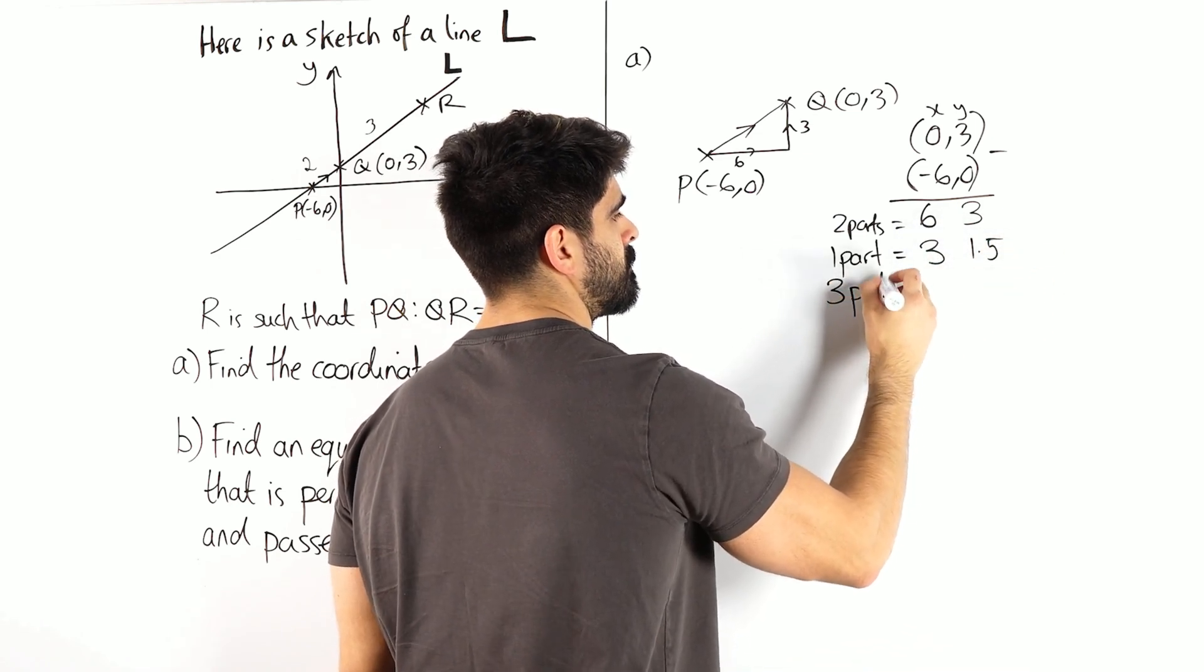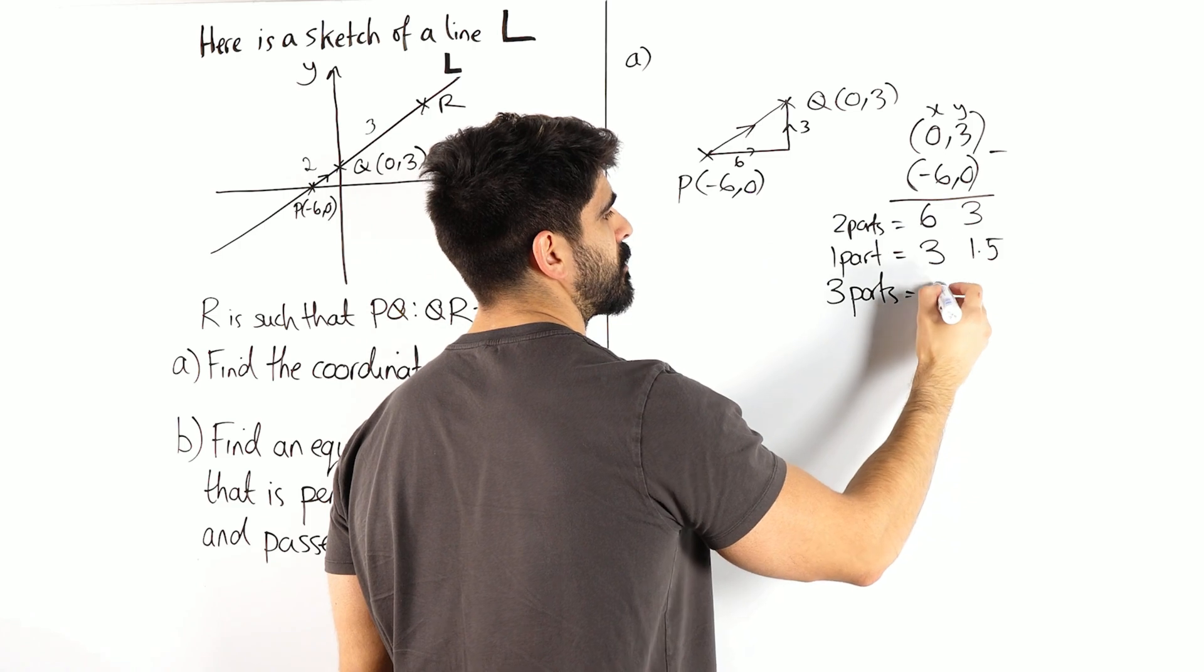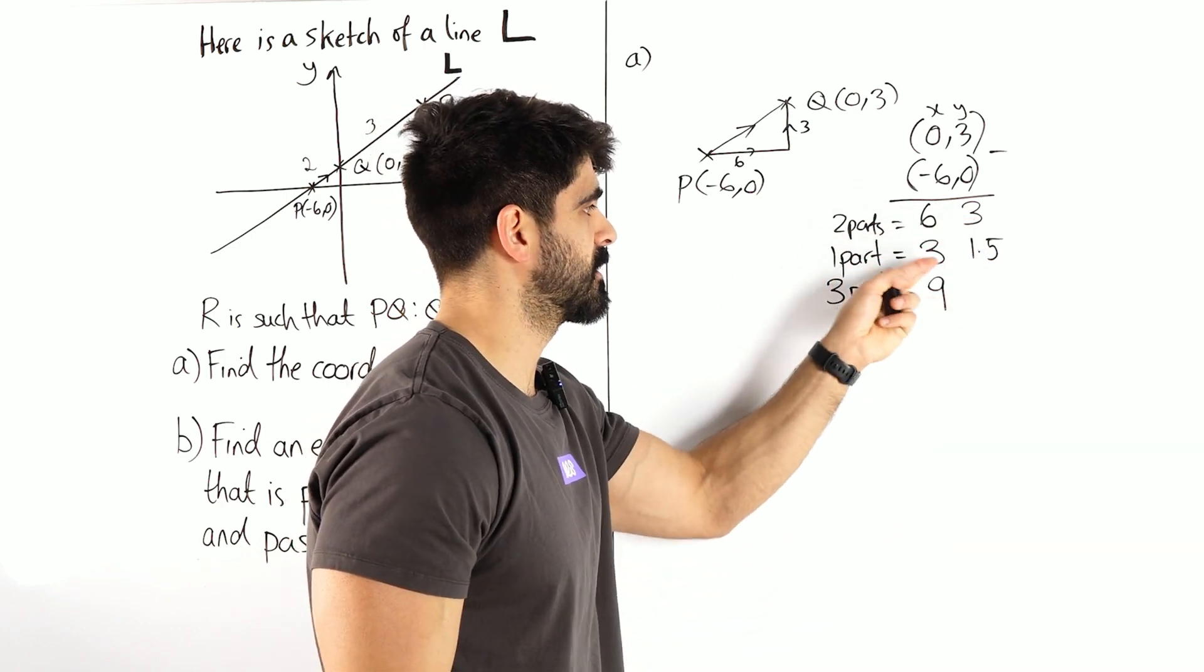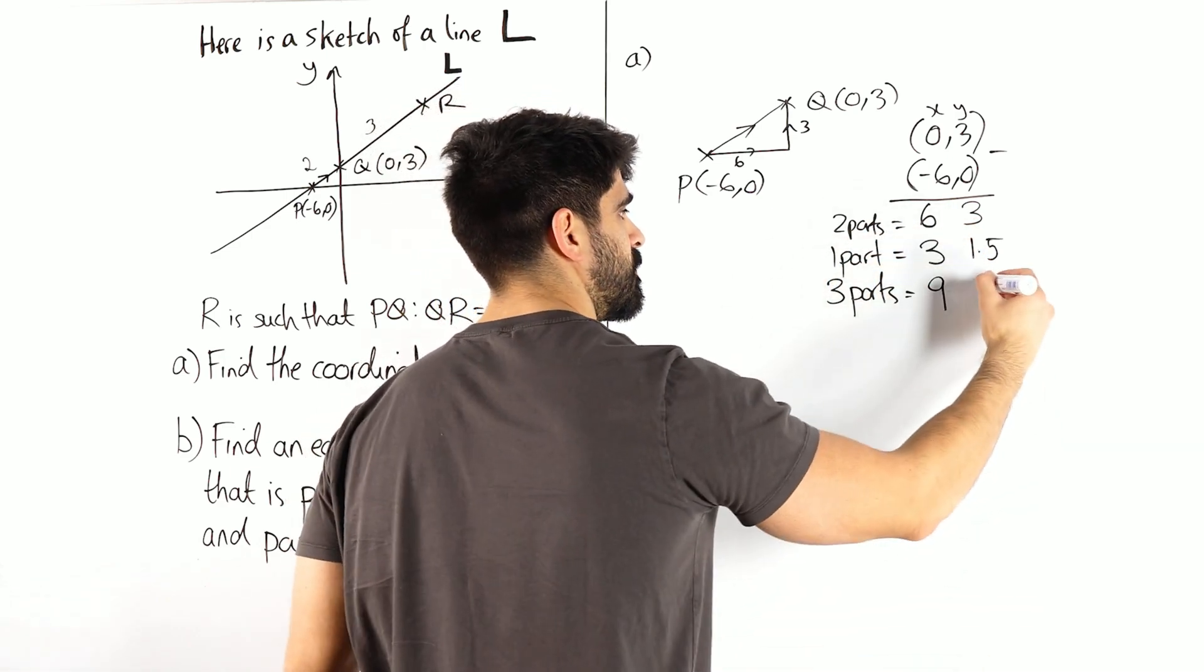So then three parts, times this all by 3 is 9. And times that by 3, you're basically adding these together. So 6 plus 3 is 9, and 3 plus 1.5 is 4.5.